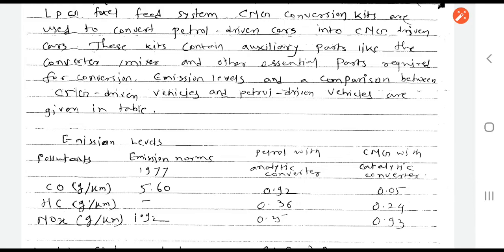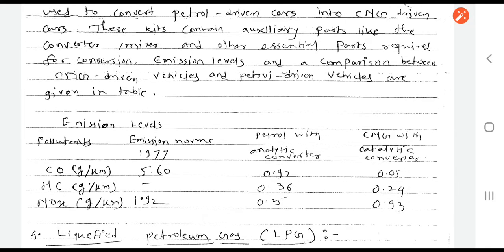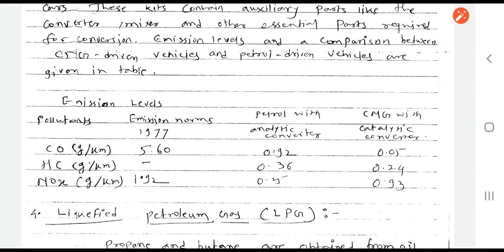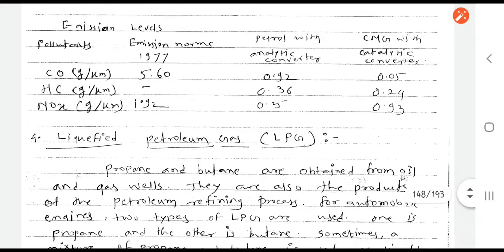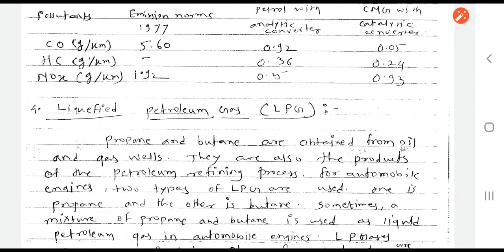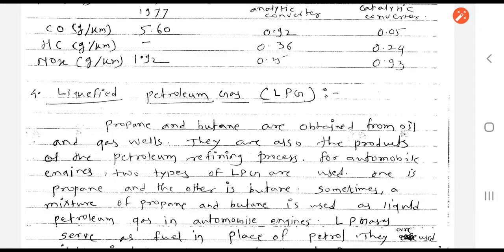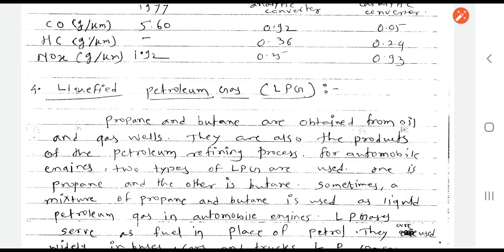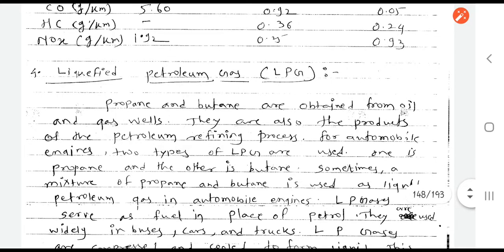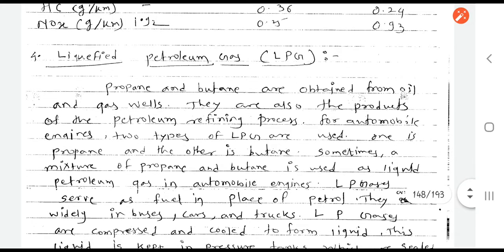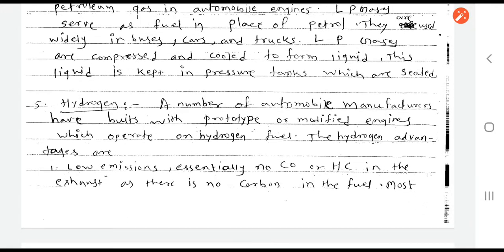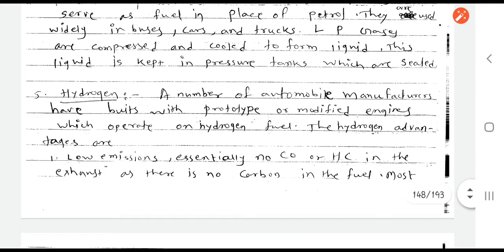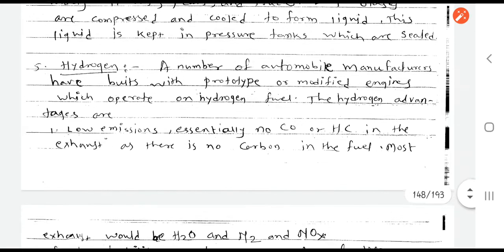The different emission levels and pollutant levels, and at what levels we can use the catalytic converter and CNG with a catalytic converter, are presented in this particular table. Liquefied petroleum gas (LPG) is also a petroleum product — it is a mixture of propane and butane. Nowadays we are using LPG for domestic applications, but it can also be used as an alternative fuel in engines. Hydrogen is also one kind of alternative fuel; hydrogen cars are available in the market — engines that can run on both petrol and hydrogen.